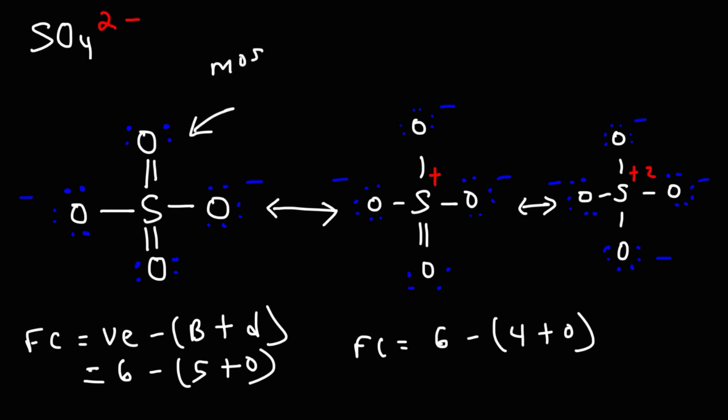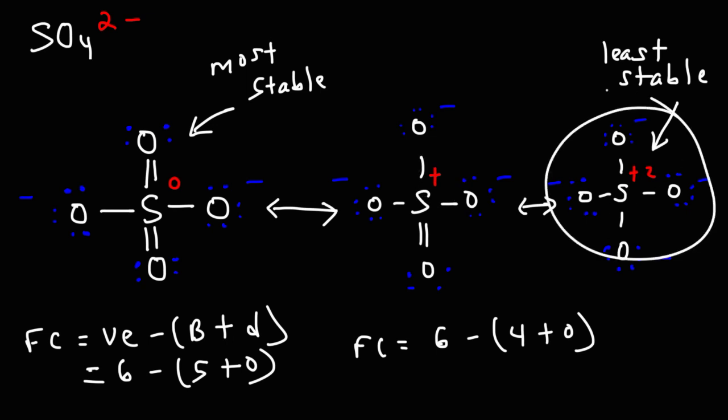This is the most stable Lewis structure of sulfate because the formal charges are at a minimum. Sulfur has a formal charge of 0. A neutral particle is more stable than a particle with a charge. Particles with charges are more reactive. This one is the least stable due to the high separation of charge. The sulfur has a 2 plus charge as opposed to a plus 1 charge. So this is the least stable Lewis structure of sulfate.